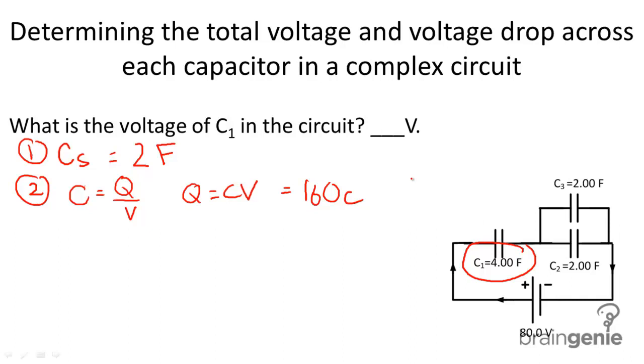So now we know that Q total, remember, is going to be equal to Q1 plus QP. Okay, so assuming this section is all one capacitor.